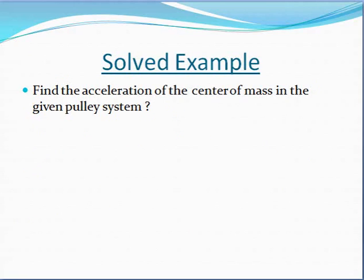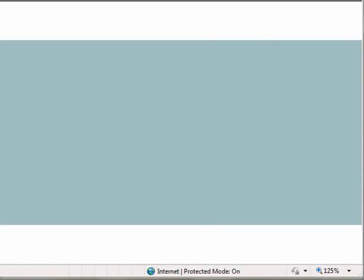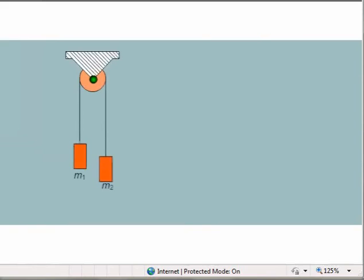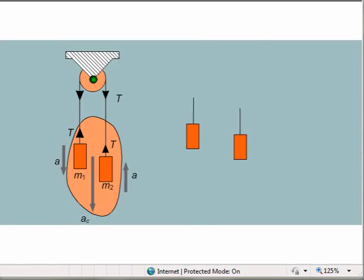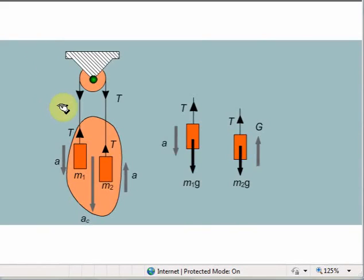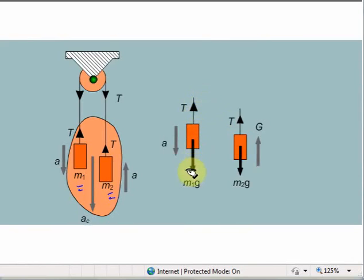Now let's see a solved example. We need to find the acceleration of the center of mass in the given pulley system. There are two masses attached: M1 and M2. All the forces acting on these two masses are shown here. On mass M1, a tension force T acts upwards and its weight M1g acts downwards. Similarly, on mass M2, the tension force T acts upwards.